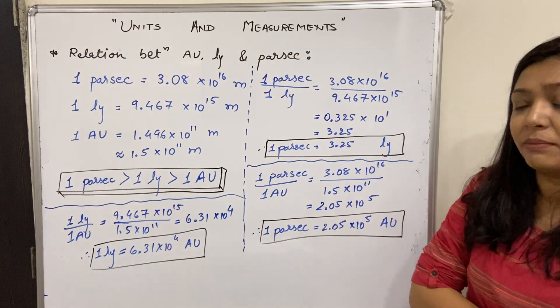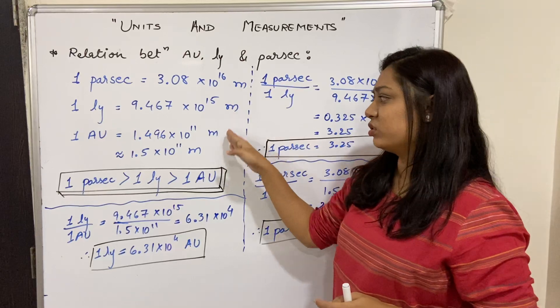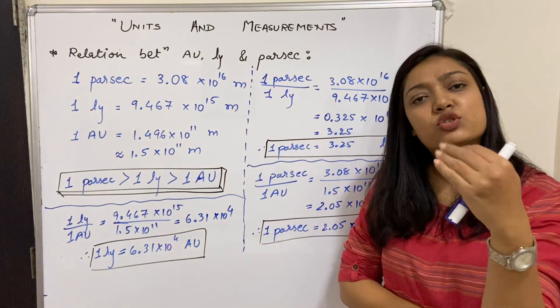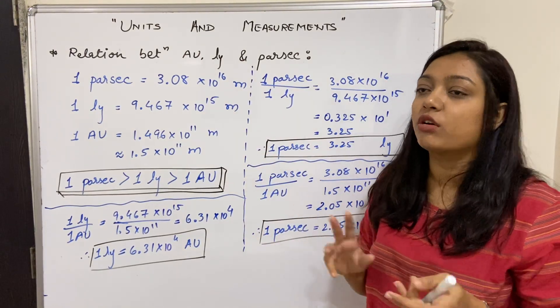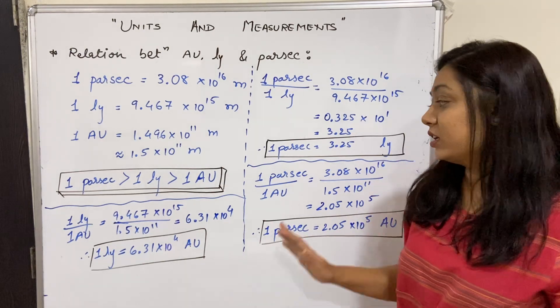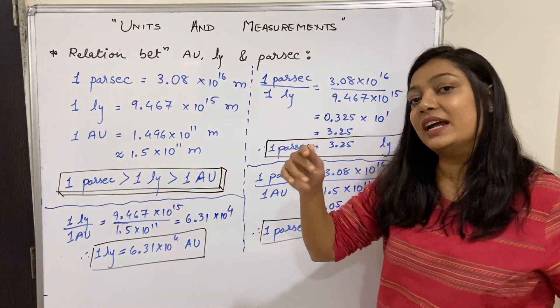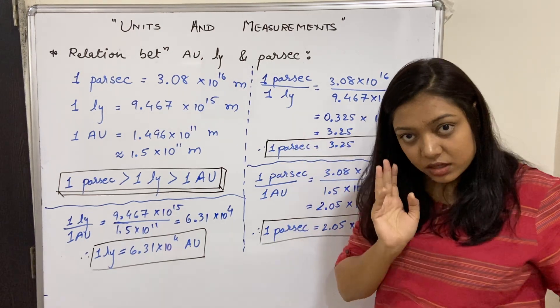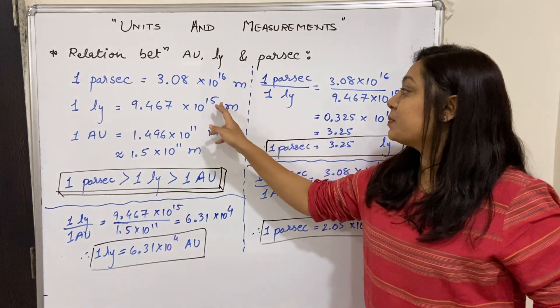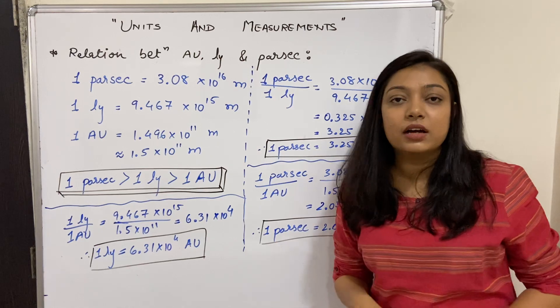What we should remember are these three relationships. We should know what to compare and how to write about it. You need to know these powers of ten for parsec, light year, and astronomical unit. Clear? Write this down.